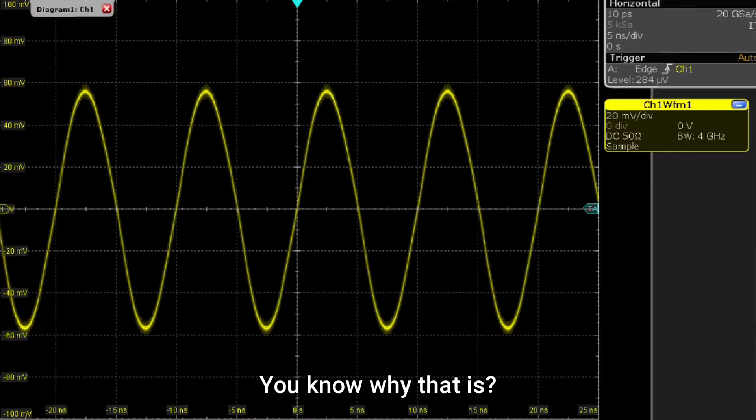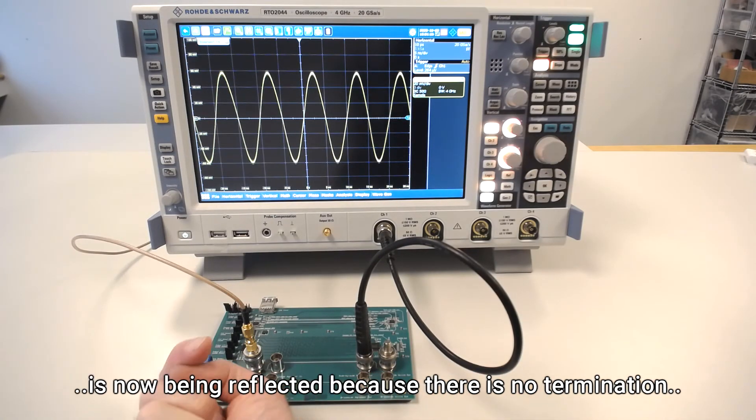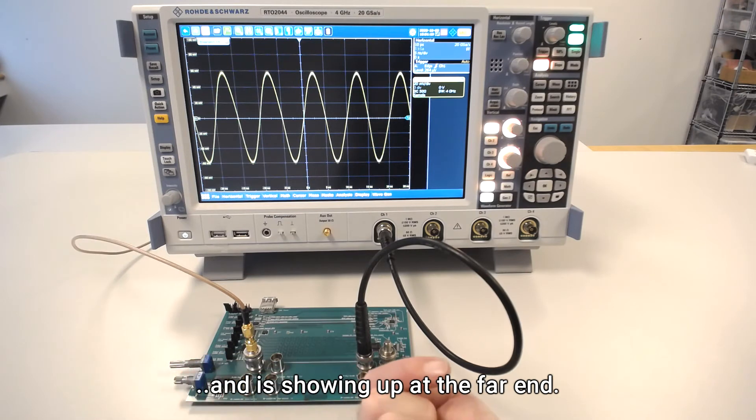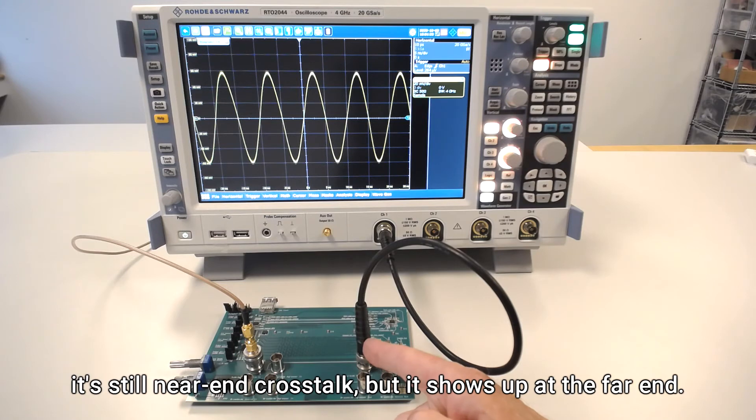Remember the crosstalk we saw for near-end is now being reflected because there's no termination, and it's showing up at the far end. That doesn't mean we call it far-end crosstalk, it's still near-end crosstalk, but it shows up at the far end.